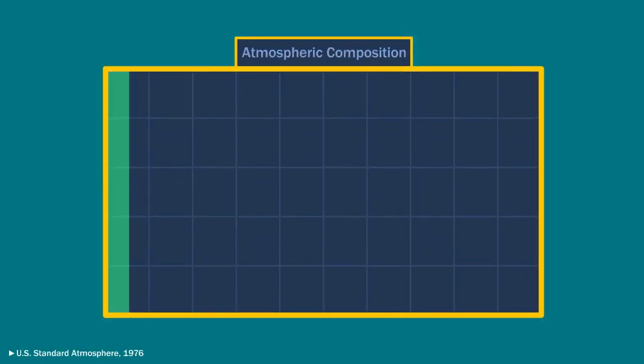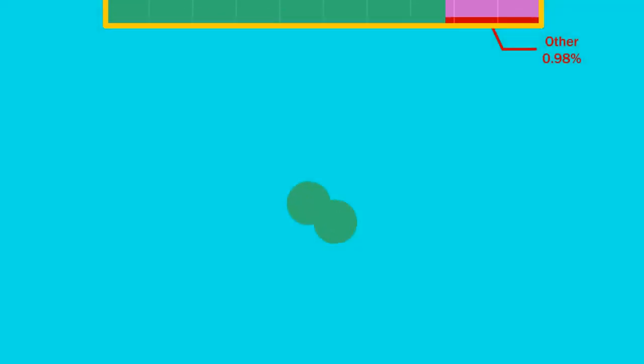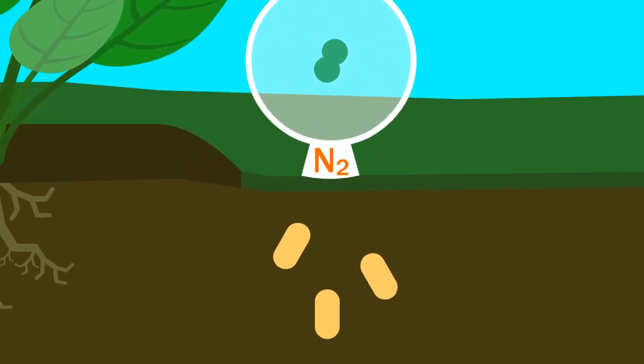Nitrogen makes up 78% of the Earth's atmosphere by volume. But most of this nitrogen takes the form of two nitrogen atoms strongly bonded together, which isn't very reactive and is useless to plants. For it to become plant-available, we need the help of bacteria.